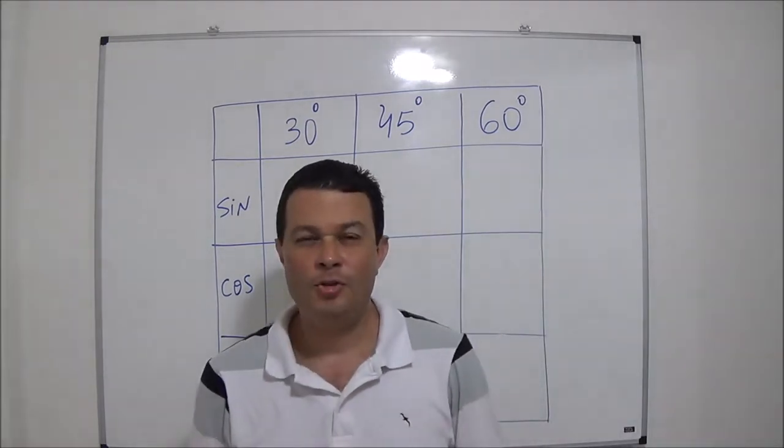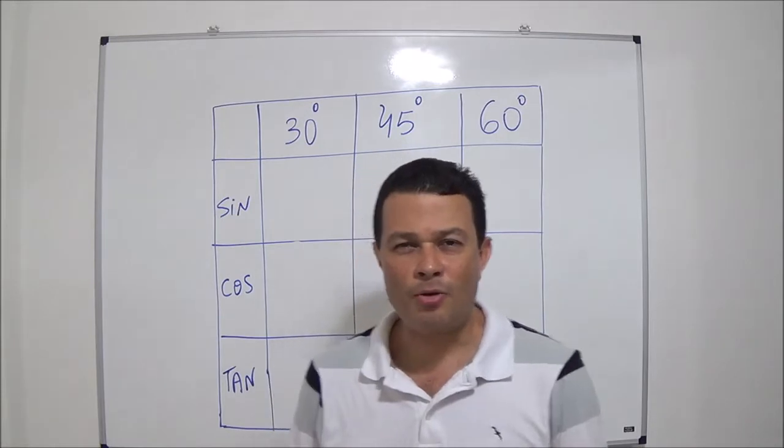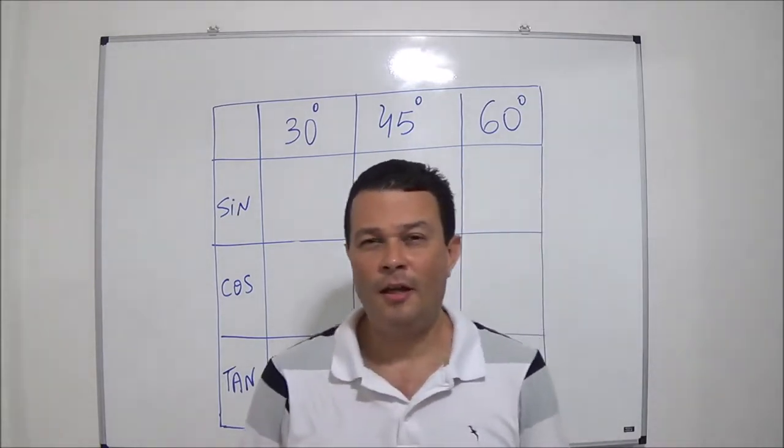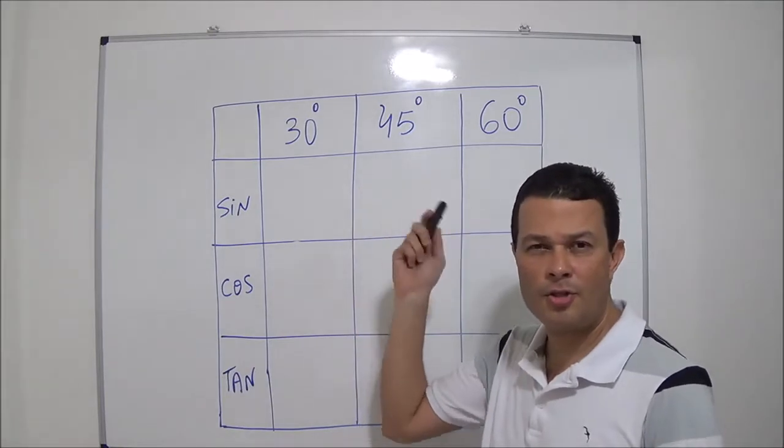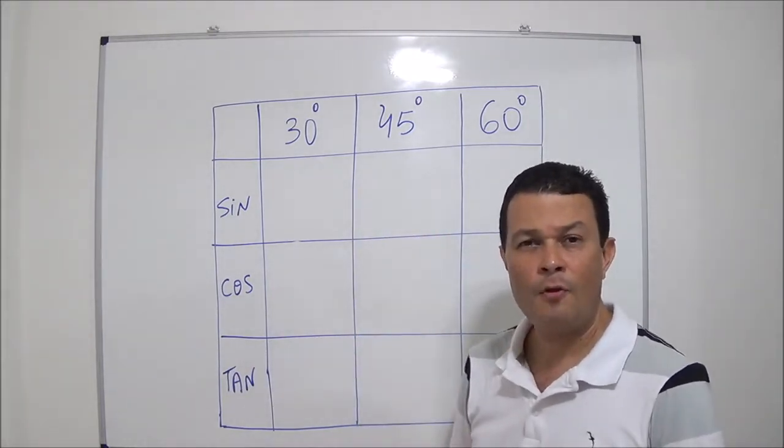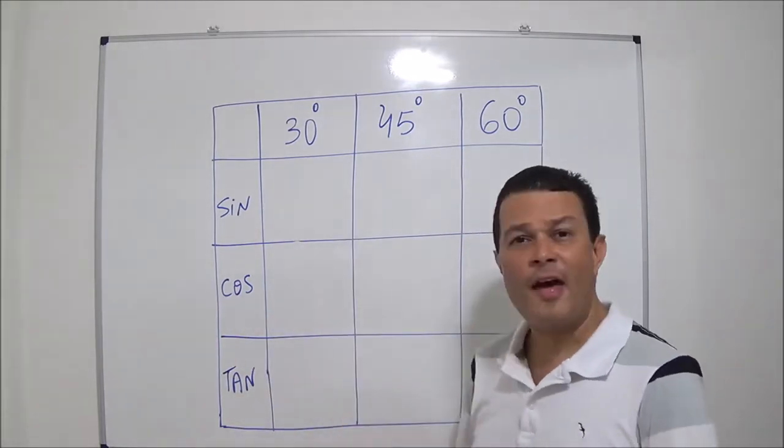Hi everyone! Today we're gonna learn a little song about sine, cosine and tangent of 30, 45 and 60 degrees. First of all you have to make a little table like that.